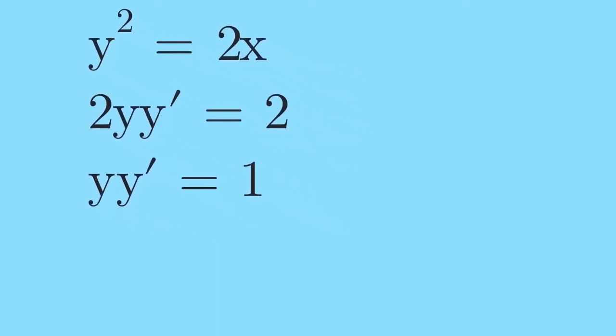We know that y' is the slope. From this point, the slope is m and the y coordinate of the point of tangency is 1 over m.